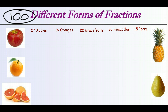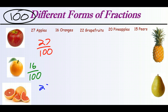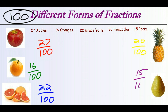So 100 is the total amount of fruit. That means the apples represent 27 out of 100, the oranges represent 16 out of 100, the grapefruits represent 22 out of 100, the pineapples represent 20 out of 100, and the pears represent 15 out of 100. So each of these is a fraction of the total basket of fruit. Looking at these fractions, some of them are nicer to look at — we can see exactly what they are out of the total group of 100.